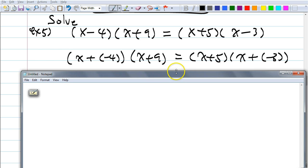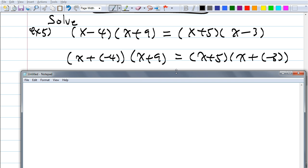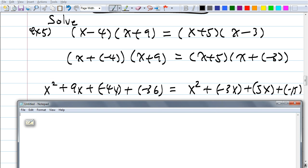On the left side, when you multiply it out, okay, I made it into addition first. Okay, so I get x squared plus 9x plus negative 4x plus negative 36 equals x squared plus negative 3x plus 5x plus negative 15.